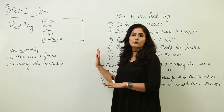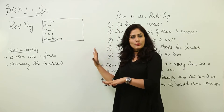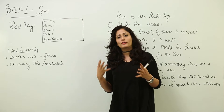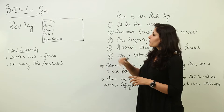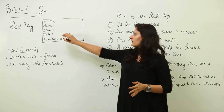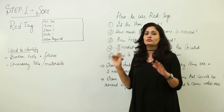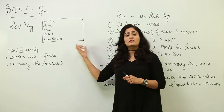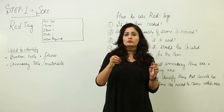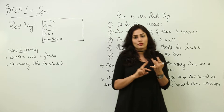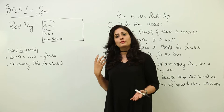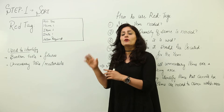This is how a simple red tag looks. It's red in color and you can create it yourself if you don't want to buy or print one. Basically it has the name of the person responsible, the item, the date, and the required action. These are put on items which are not required, are somehow hazardous, or have to be repaired, so that other people know some action has to be taken.